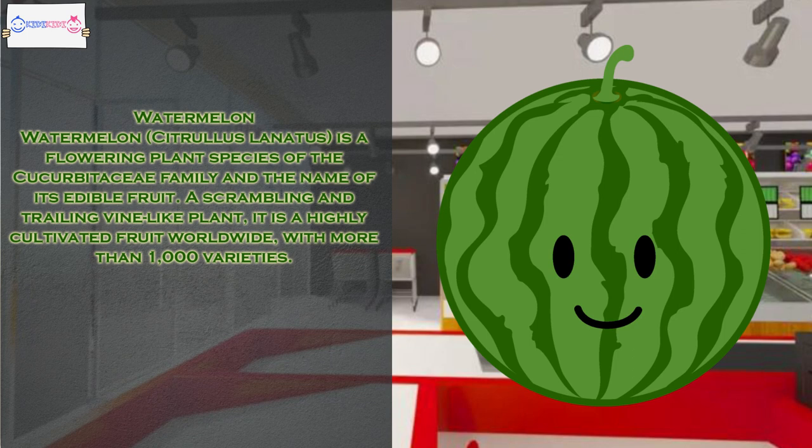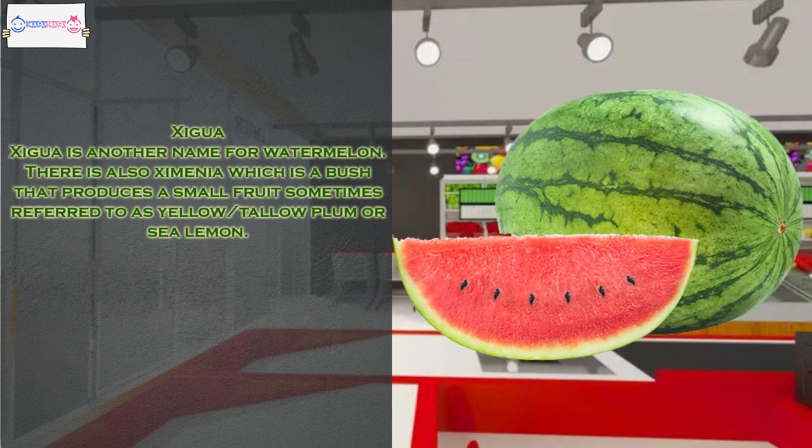Watermelon, Citrullus lanatus, is a flowering plant species of the Cucurbitaceae family and the name of its edible fruit. A scrambling and trailing vine-like plant, it is a highly cultivated fruit worldwide, with more than 1,000 varieties. Zyga is another name for watermelon. There is also zymnia, which is a bush that produces a small fruit sometimes referred to as yellow tallow plum or sea lemon.